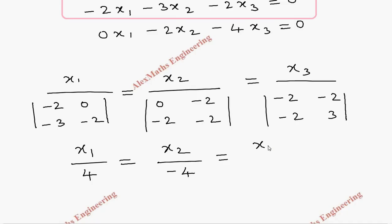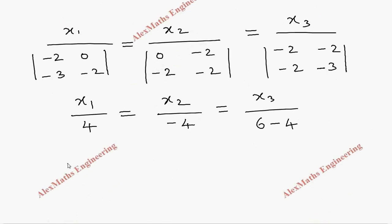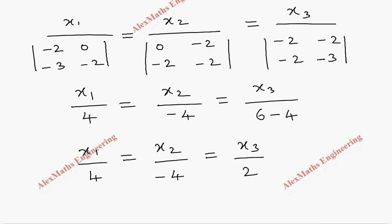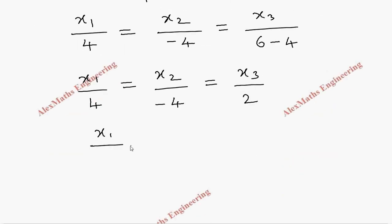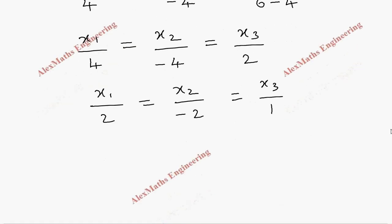Continuing the evaluation: x3 by (minus 6 plus 4) — after accounting for the minus sign — gives x3 by minus 4 plus ... the final result is x1 by 4 = x2 by minus 4 = x3 by 2. Dividing all by 2 to get the simplest ratio: 2, minus 2, 1. Therefore the eigenvector x3 corresponding to lambda = 9 is [2, minus 2, 1]. We have now found all three eigenvalues and their corresponding eigenvectors.